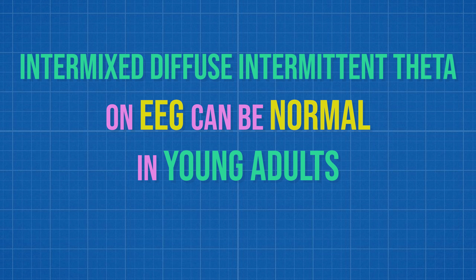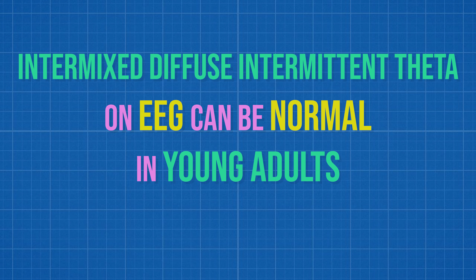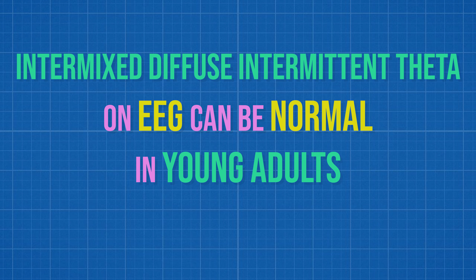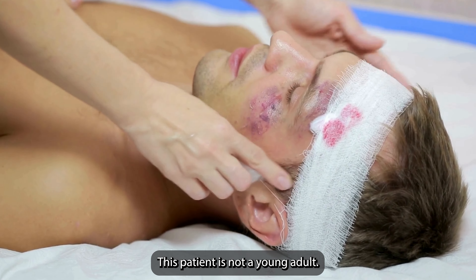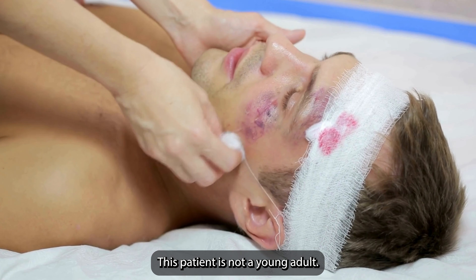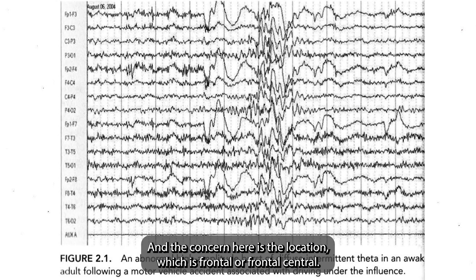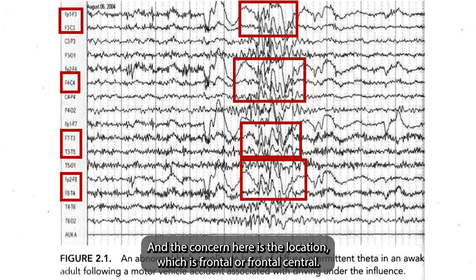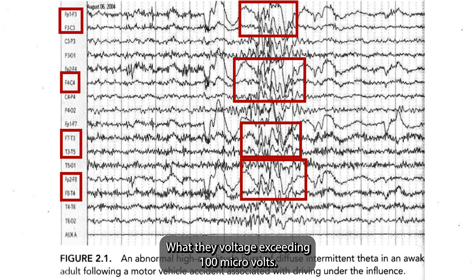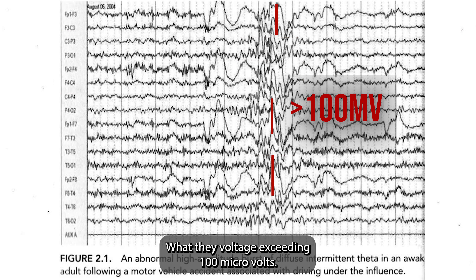Although intermixed diffuse intermittent theta on an EEG can be seen normally in young adults, this patient is not a young adult, and the concern here is the location, which is frontal or frontal-central, with a voltage exceeding 100 microvolts.